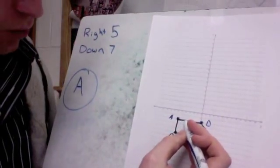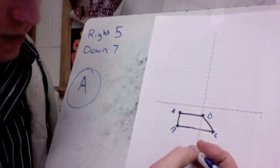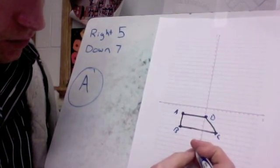Okay, so I'll start here, 1, 2, 3, 4, 5, 1, 2, 3, 4, 5, 6, 7. Okay, that was A.